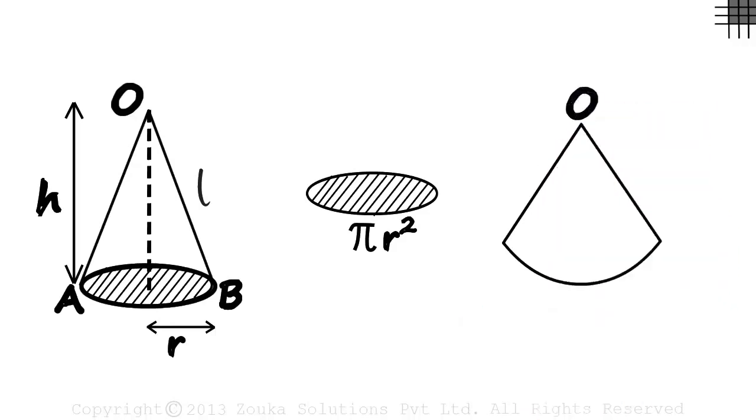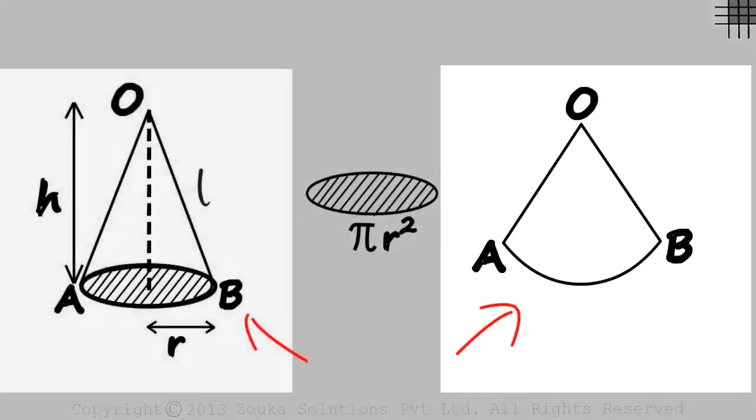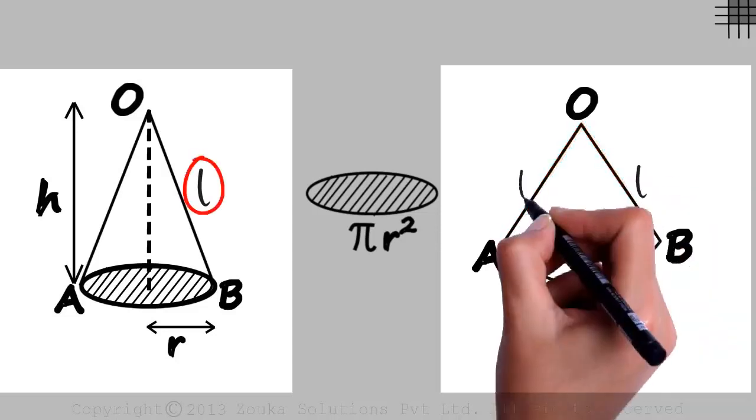Let the sector be O, A, B. Look at the sector and the cone. What do you think is the measure of these two lengths? O, A and O, B will equal the slant height which is L.